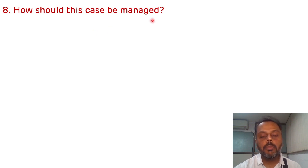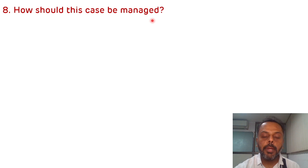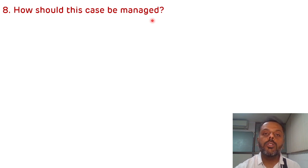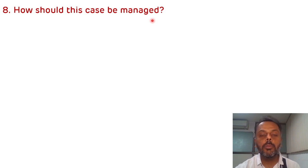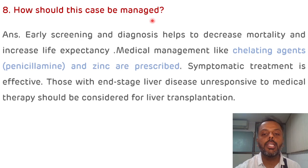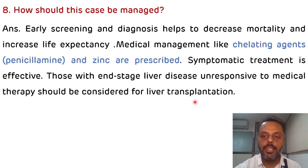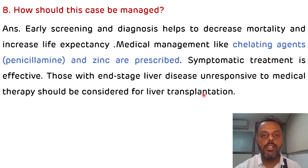How should this case be managed? This case should be managed with D-penicillamine, which is a chelating agent that helps in the chelation and excretion of copper. Zinc can also be given to reduce the uptake of copper from the GI tract. For those not responsive to medical therapy, liver transplantation is an option.